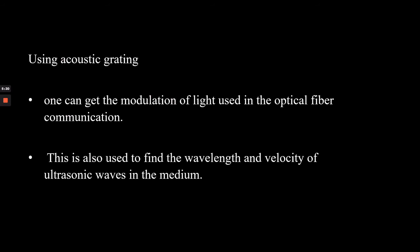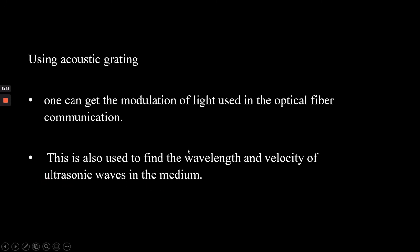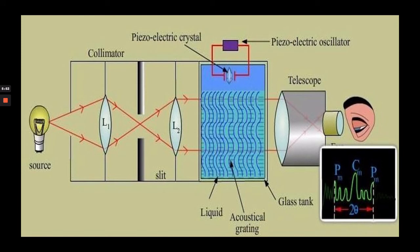What is the use of this acoustic grating? With the help of acoustic grating, one can do the modulation of light used in optical fiber communication, and it is also used to find the wavelength and velocity of ultrasonic waves in the liquid medium. Now we will see how the wavelength and velocity of ultrasonic waves are determined with the help of an experimental setup.